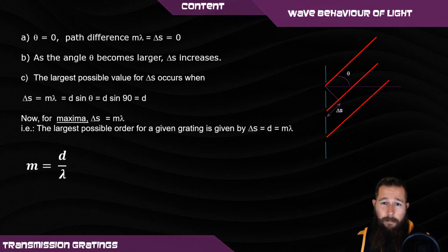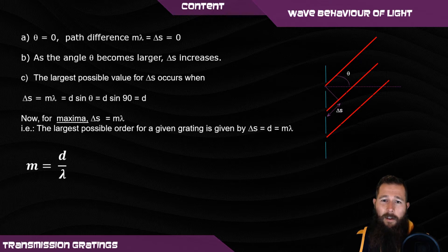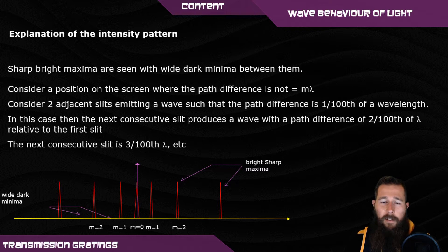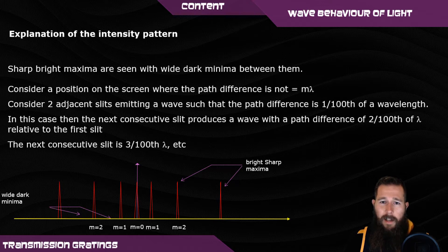When calculating the maximum number of maxima, we have to look at the symmetrical case — it's the same on both sides — and also add the central maximum. When using a diffraction grating, there are so many light sources being considered — more than just the two in Young's double slit experiment — there are very sharp maxima and very discrete dark spots between them. The bright spots are where the path difference between all the sources is a perfect multiple integer.